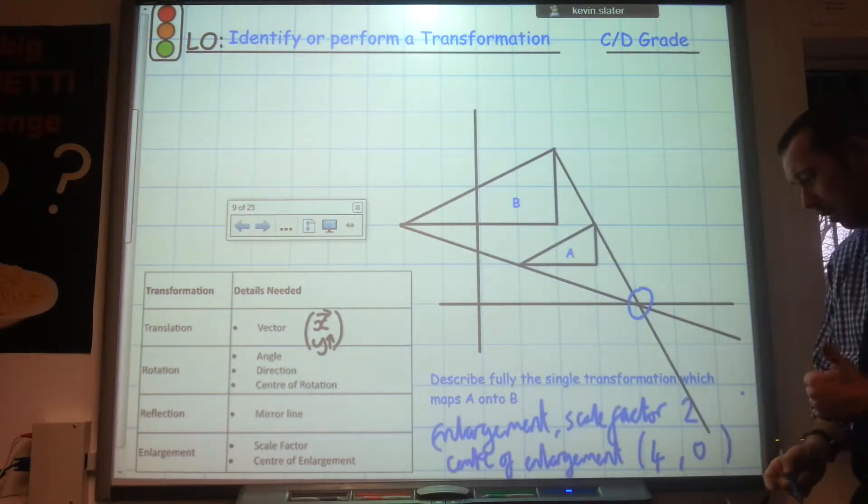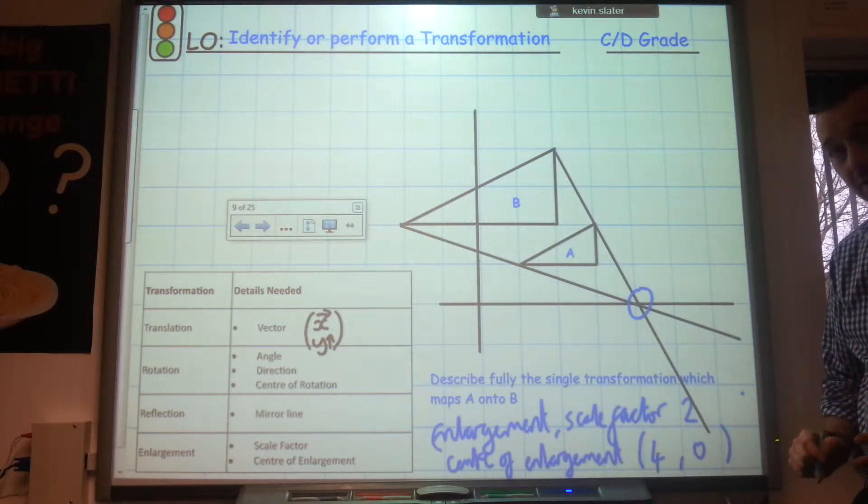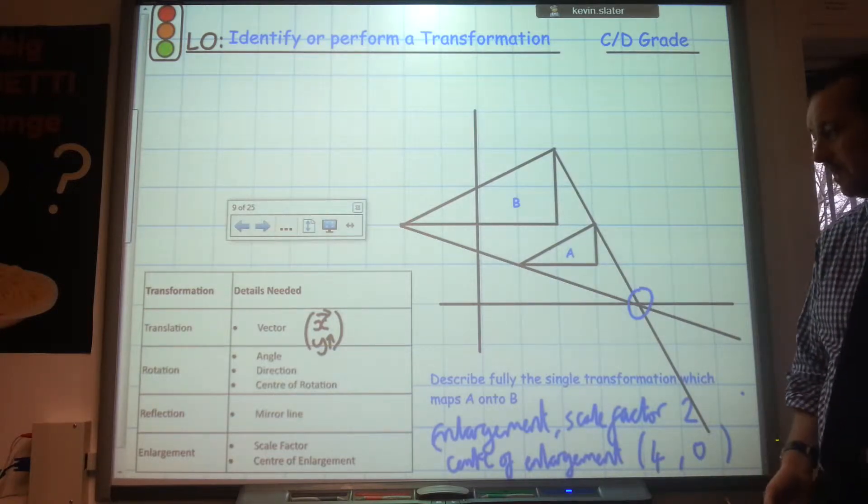So there we go. That's an enlargement for one mark. Scale factor 2 for a second mark. And centre of enlargement 4-0 for the full three marks there.